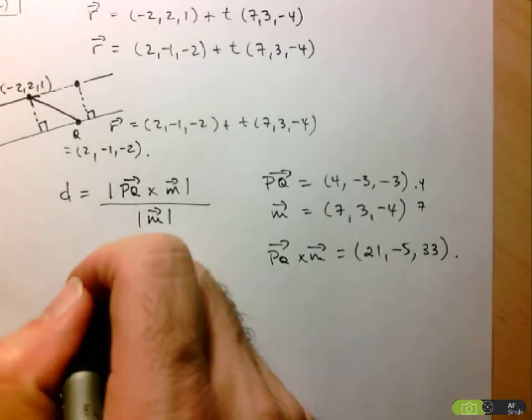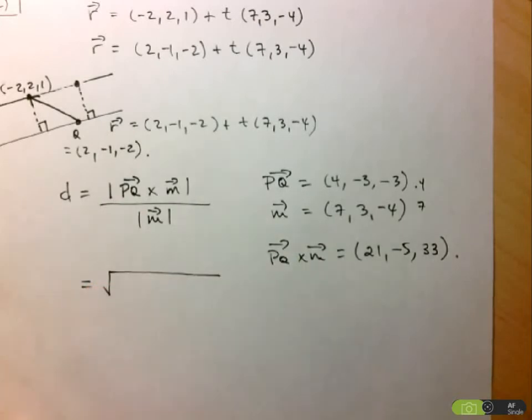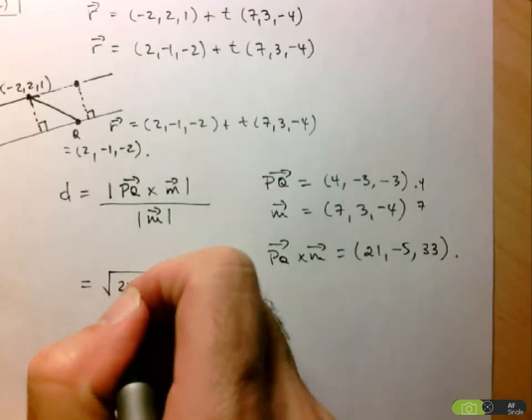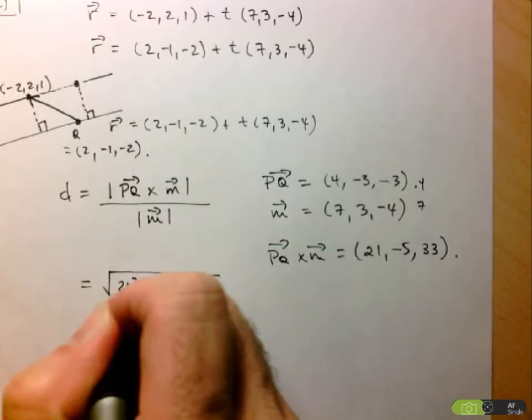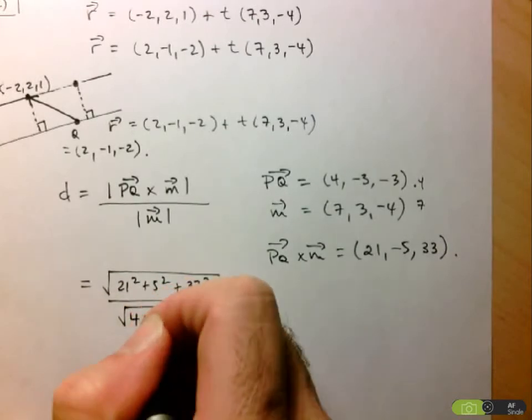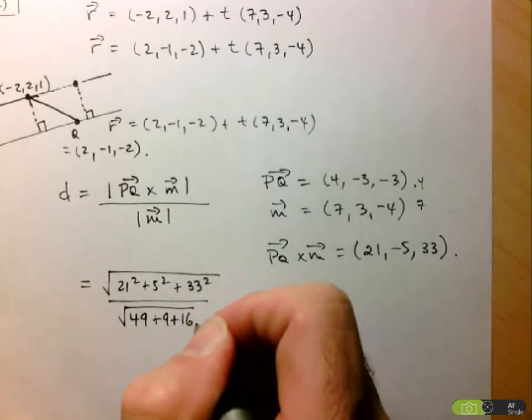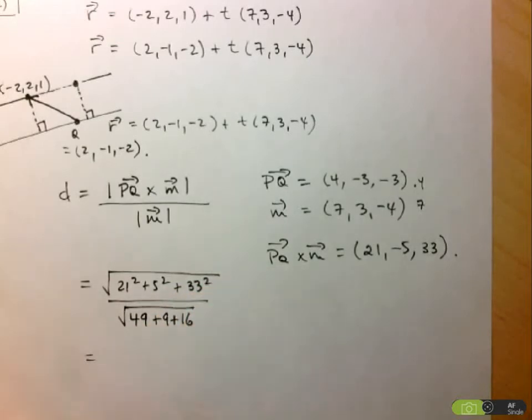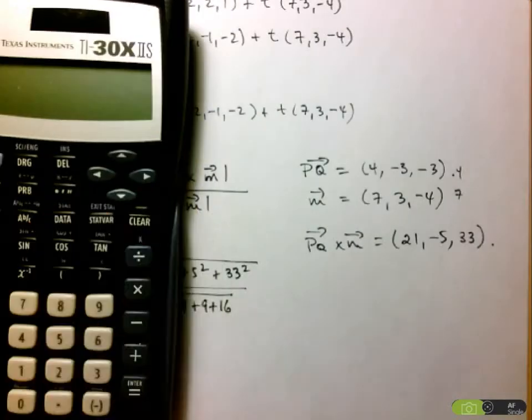So we can now find the magnitude of this cross product. So that is 21 squared plus 5 squared plus 33 squared, and divide that by the magnitude of M, which is just going to be 49 plus 9 plus 16. And I think I'll get my calculator out for this calculation here.